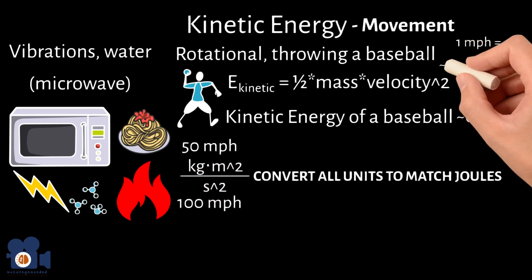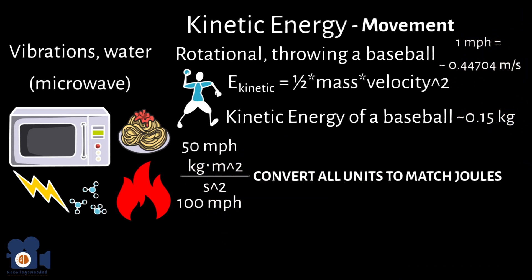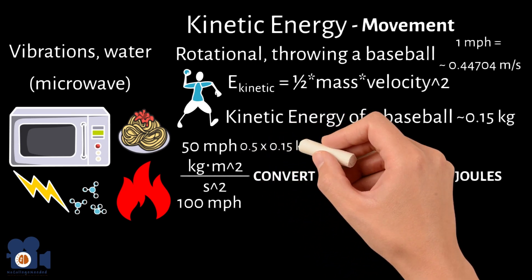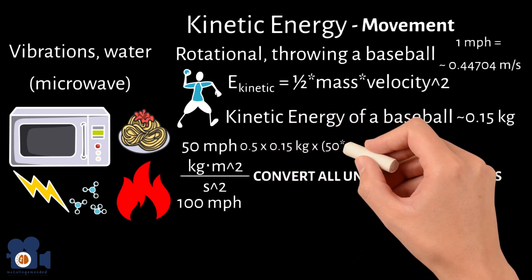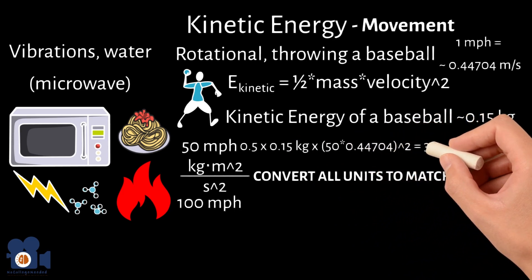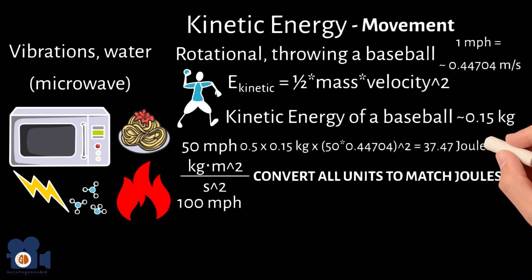One mile per hour equals approximately 0.44704 meters per second. So the two equations would look like 0.5 times 0.15 times 50 times 0.44704 squared equals 37.47 Joules.